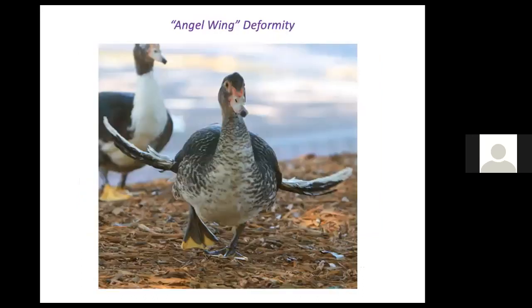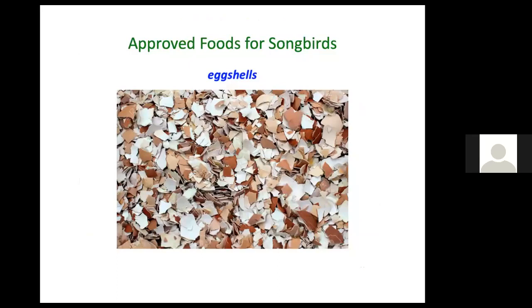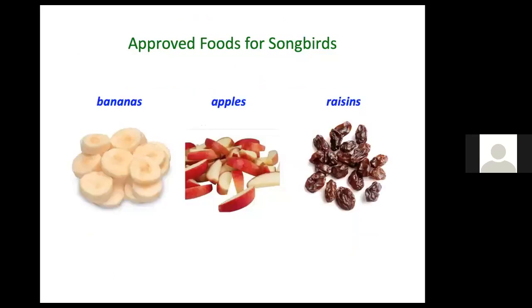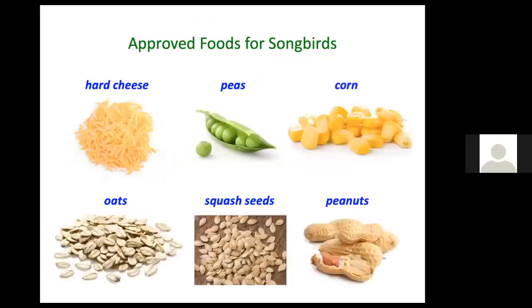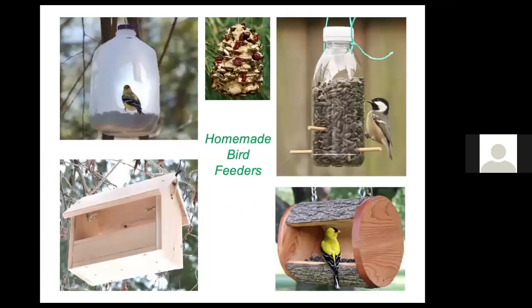This bird was fed too much processed baked goods and will never fly again. Approved foods for songbirds include eggshells — not only for calcium but also for the roughage birds need in their gizzards to digest food. Bananas, apples, and raisins are among foods songbirds can eat; also oats, squash seeds, pumpkin seeds, peanuts, other nuts, and peanut butter. There are many do-it-yourself feeder options that proliferate on the internet.